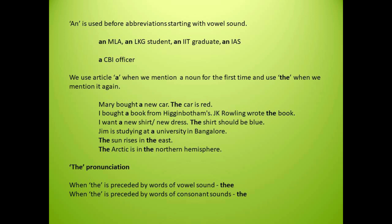We use the article 'a' when we mention a noun for the first time, and use 'the' when we mention it again. For example: Mary bought a new car. The car is red. When the car is mentioned for the first time, we use 'a.' The second time it is mentioned, we use 'the.'